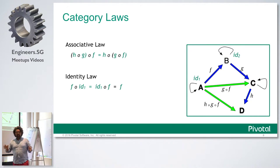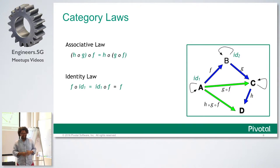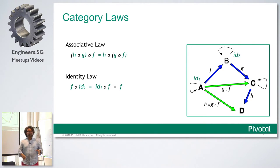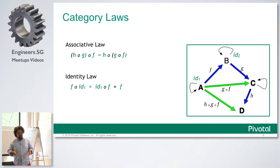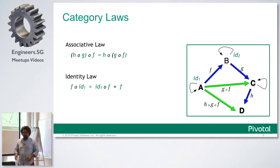These things are still a bit abstract, but we're going to get down into the nitty-gritty in a couple more slides. Category laws: the associative law and the identity law. These are constraints placed on the branch of mathematics so that things make sense and so we can reason about them mathematically.